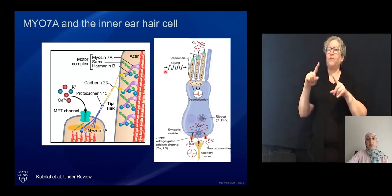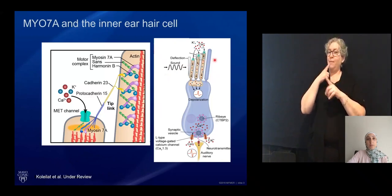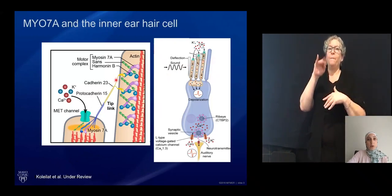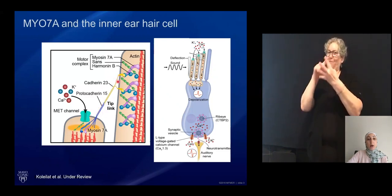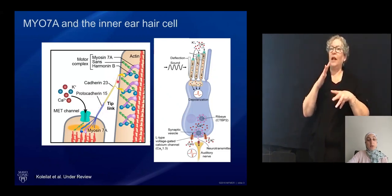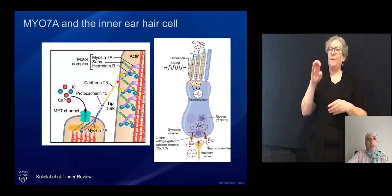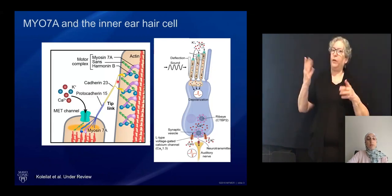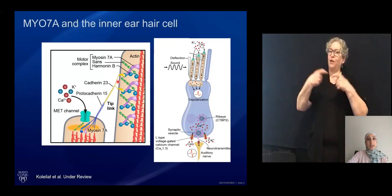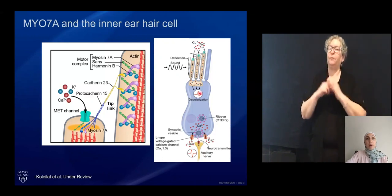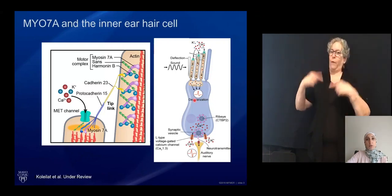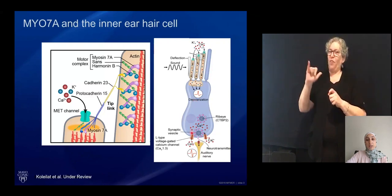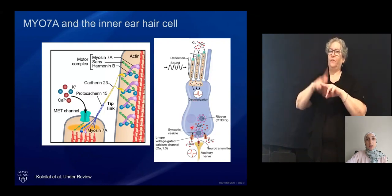When stereocilia are deflected due to sound, myosin pulls on the tip-link structure — that connecting structure between the finger-like projections — allowing the mechanotransduction channel, or MET channel, to completely open, causing an influx of positively charged ions into the cell. The change in membrane potential causes the cell to depolarize, and L-type voltage-gated calcium channels open in response, causing an increase in intracellular calcium at the bottom of the cell.